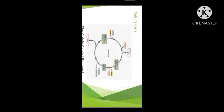In one Calvin cycle, three molecules of ATP and two molecules of NADPH are required. In order to meet the difference in the number of ATP and NADPH used in the dark reaction, cyclic photophosphorylation takes place. Two molecules of ATP are used during the reduction step and one molecule of ATP is used in the regeneration of RuBP.